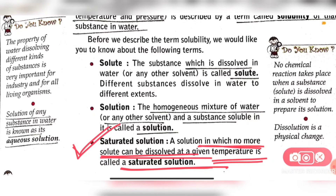That's why we always have to denote the solubility at a particular temperature. So what is the saturated solution? At a particular temperature, when we put the maximum amount of solute in a solution and there is no more space to dissolve the solute, that solution is called the saturated solution.